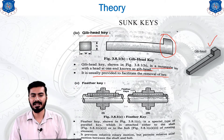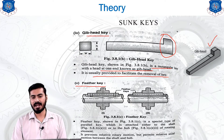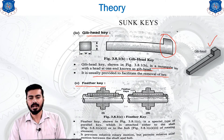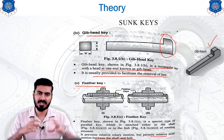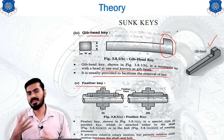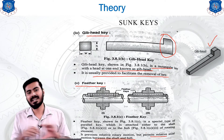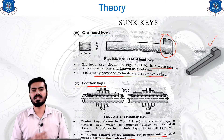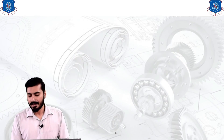The last type of sunk key is the feather key. The feather key is attached either to the shaft or the hub; it prevents relative rotary motion but permits relative axial motion between the shaft and hub. If connected to the hub, the shaft can move axially; if connected to the shaft, the hub can slide over the shaft.